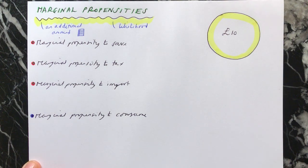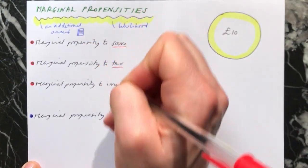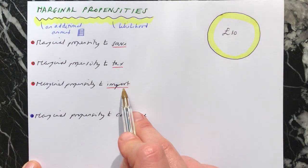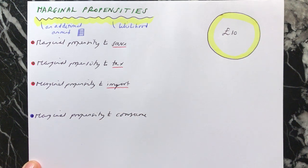So the marginal propensity to save, tax and import. You will have noticed something about these three things. We know that saving, taxation and imports are all forms of leakages or withdrawals. And then here we have the marginal propensity to consume.